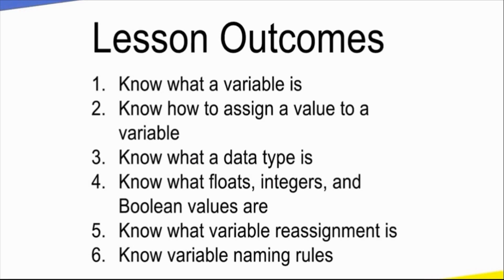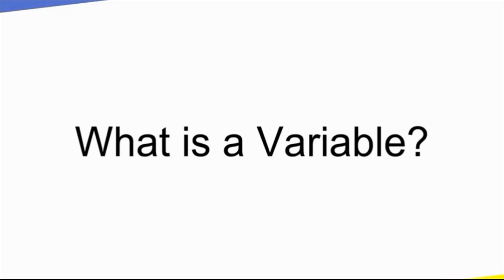Data types: floats, integers, boolean, variables — how to reassign and how to name them. Variables are a basic concept of how to interact with a computer program. In real life, think of one box and one ball: the ball is the stored data, the box is the computer memory — that is a variable.